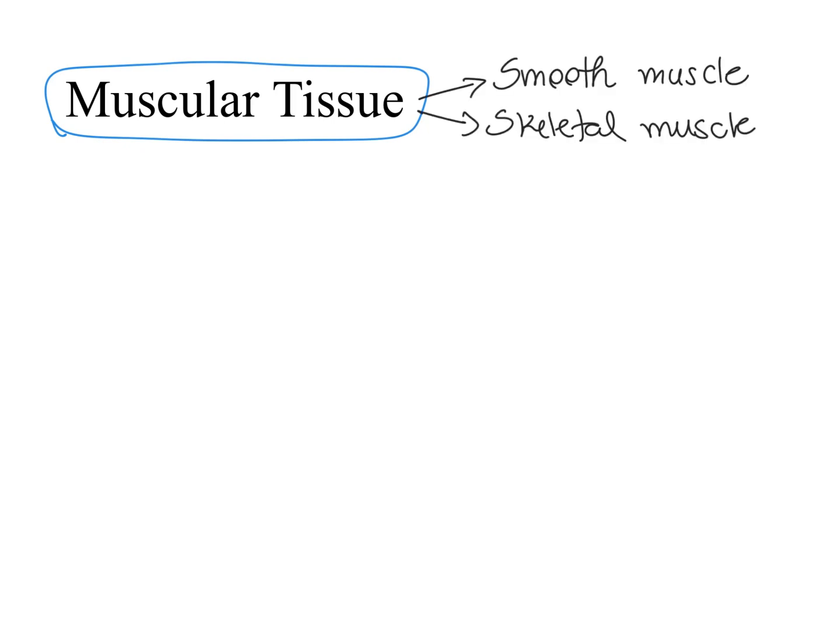Do you remember their names? They were epithelial tissue, connective tissue, nervous tissue, and muscular tissue. When we dive in deep into muscular tissue, we see that we have three different types of muscles, and they are named smooth muscle, skeletal muscle, and cardiac muscle. These three different types of muscles are found in different places of our body.